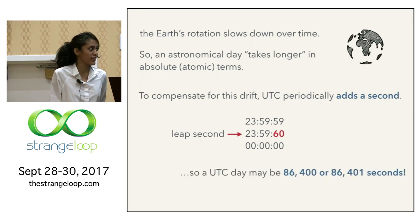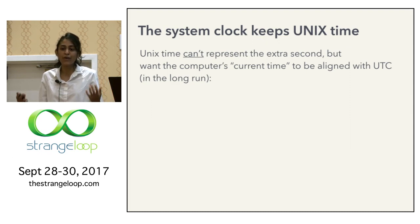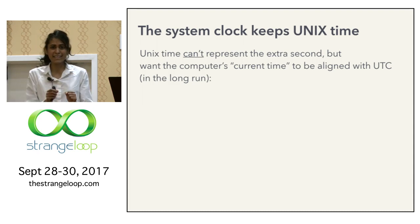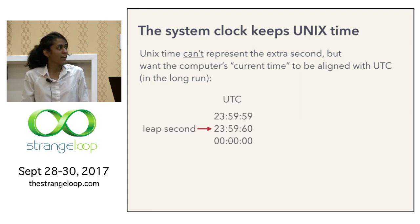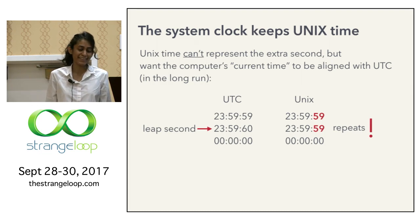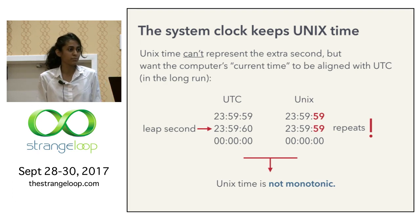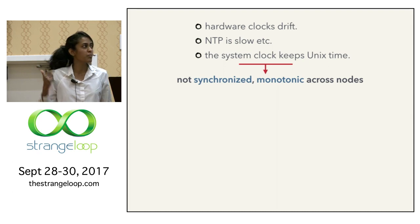End of interlude, back to Unix time. A UTC day can be 86,400 or 86,401 seconds long. But Unix time kept by the system clock doesn't know how to represent this extra second. In the long run, we want our computer's idea of current time to remain aligned with UTC. So what does Unix time do? In the case of a leap second, Unix time simply repeats a second — which means the time kept by our system clock is not monotonic.